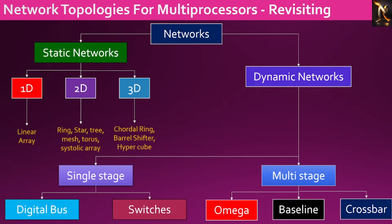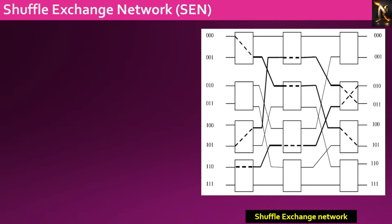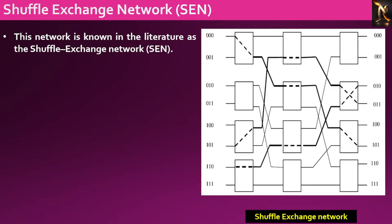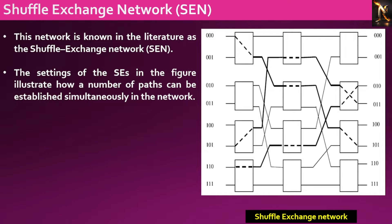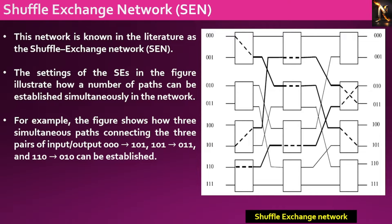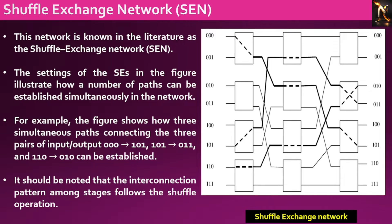In this video session, our focus will be solely on exploring the shuffle exchange and omega network. The network depicted here is referred to as the shuffle exchange network. The configurations of the shuffle exchange network demonstrate how multiple paths can be concurrently established within the network. For instance, the figure illustrates the simultaneous creation of three paths connecting the input-output pairs 000 to 101, 101 to 011, and 110 to 010.